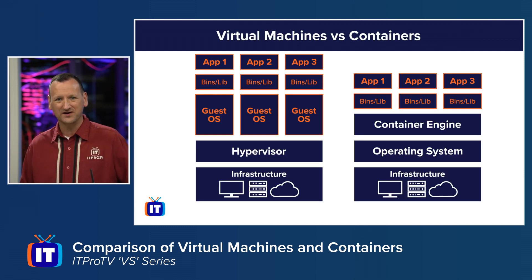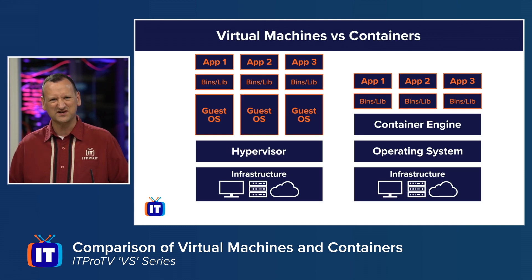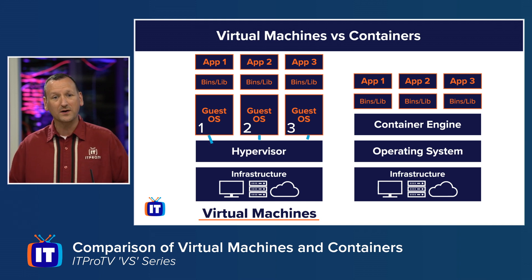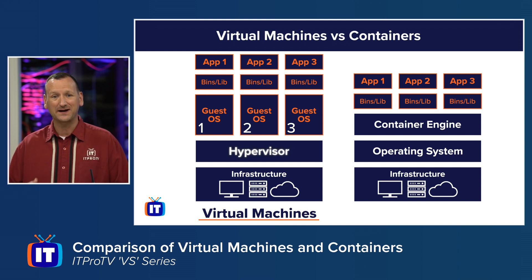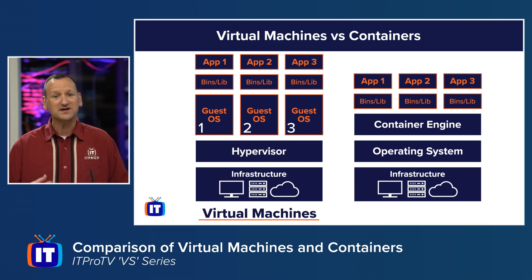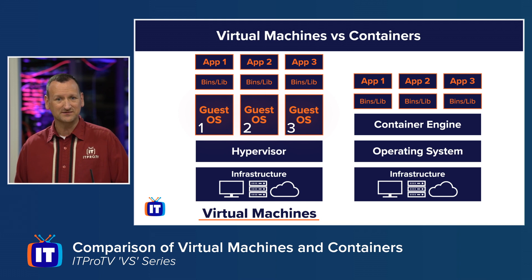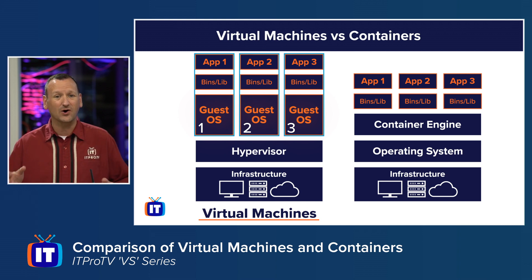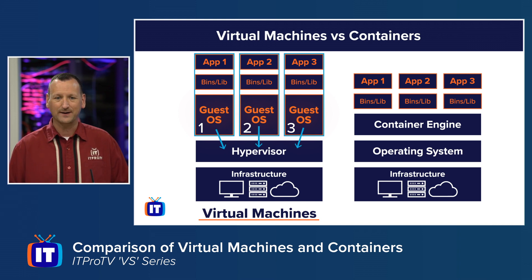Let's talk about how they work to understand where the efficiencies are. With virtual machines, think of that carpool analogy — we have multiple operating systems running on one piece of hardware. We have our hardware, and we have some host operating system that acts as a hypervisor, like a traffic cop determining who gets access to hardware when. On top of that, we have partitions, and in each partition we install a full operating system with any binaries and libraries and ultimately the applications we want to run. Each partition has its own completely separate operating system, all running on top of that shared hypervisor.